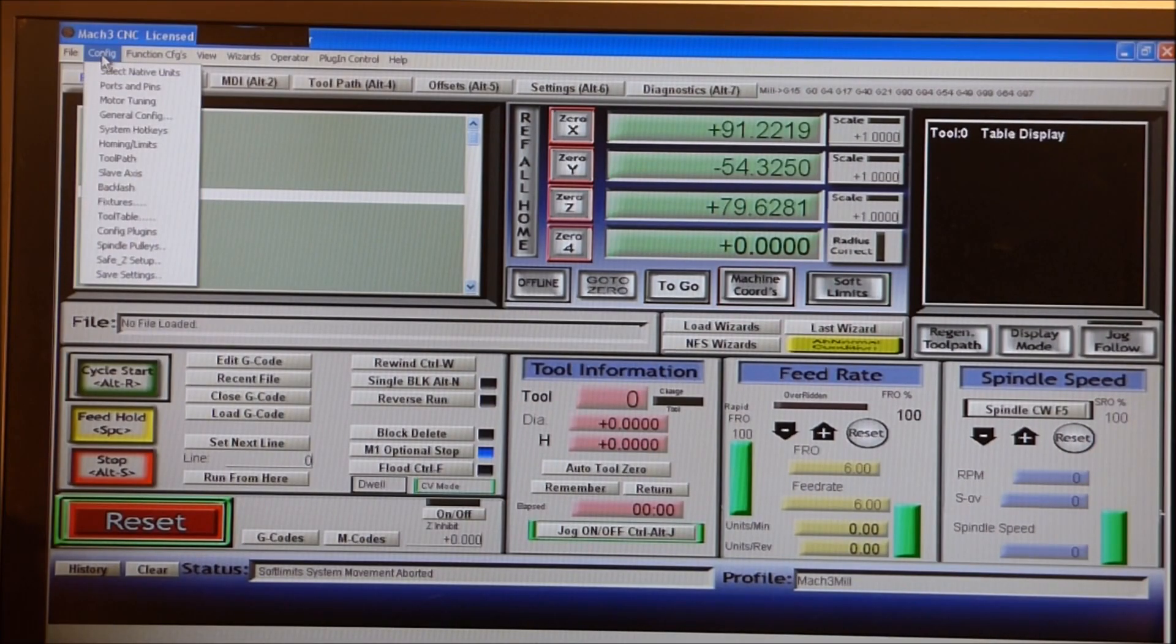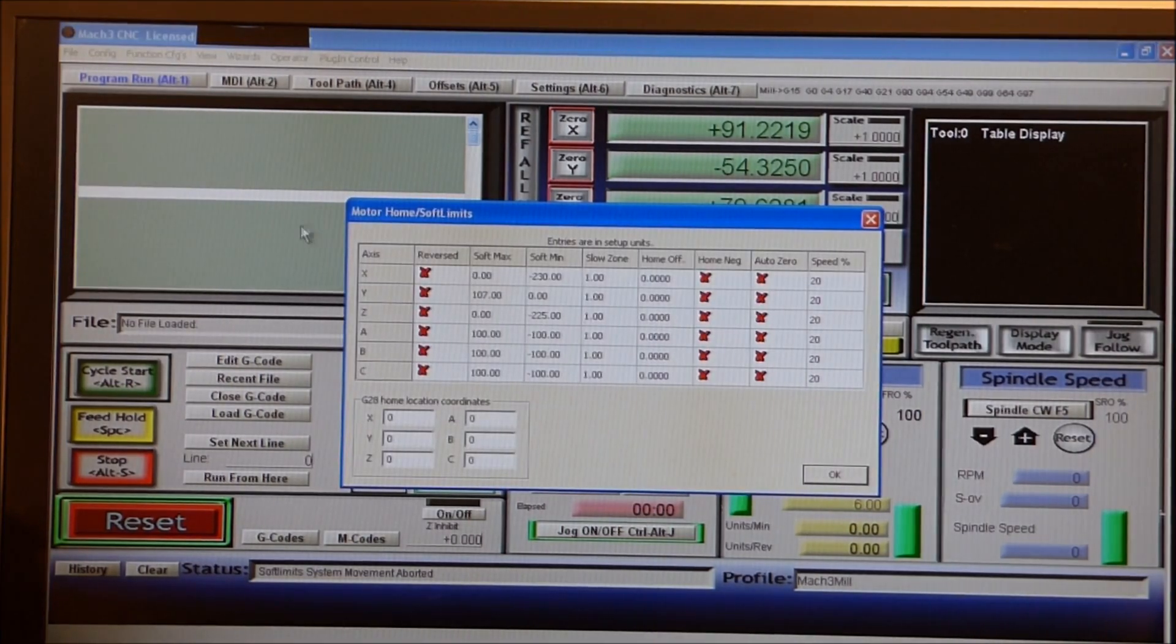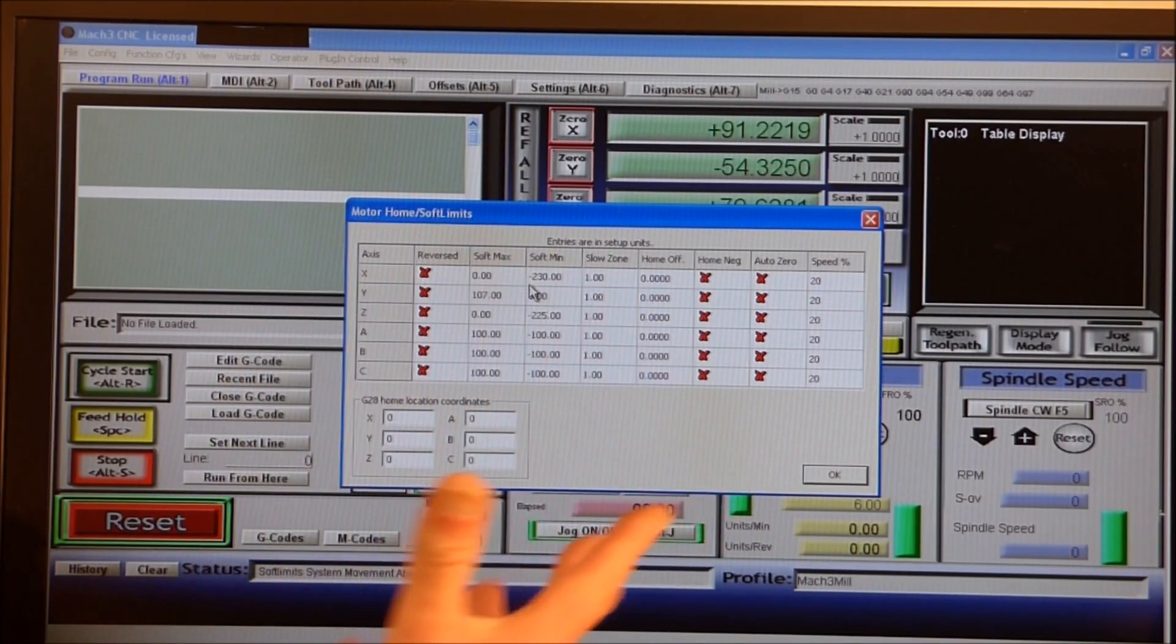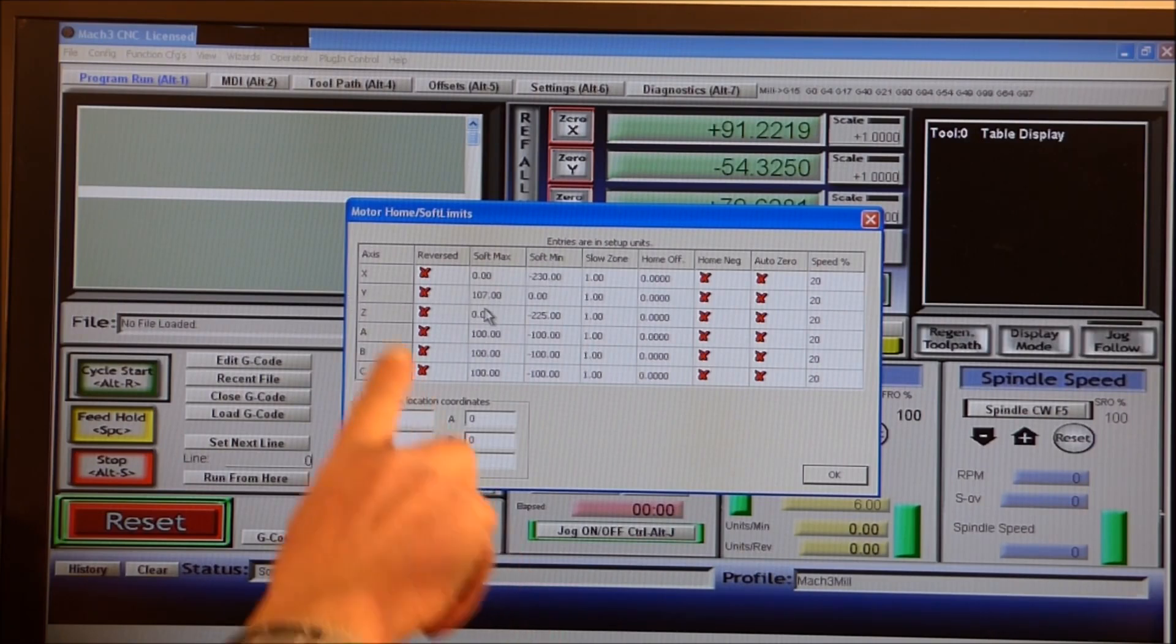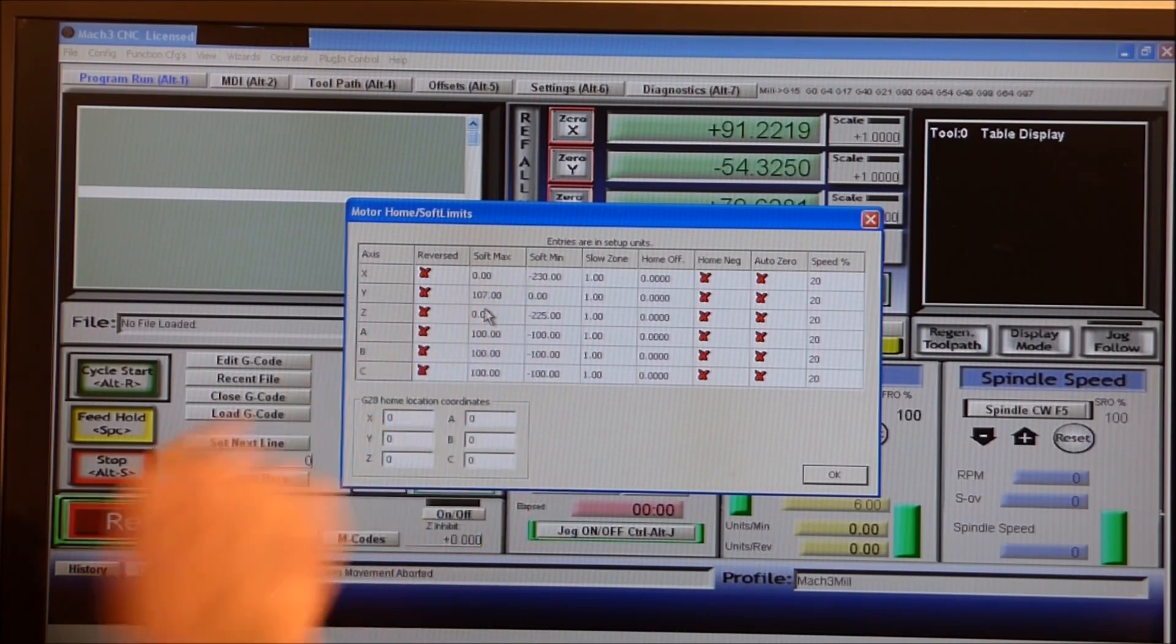Go to config, come down to homing and limits. What you need to do is - for the X I've already pre-done this, it's very easy - you just fill this in. The X is 230, the Y as I've just measured is 107, that's where you put it there.